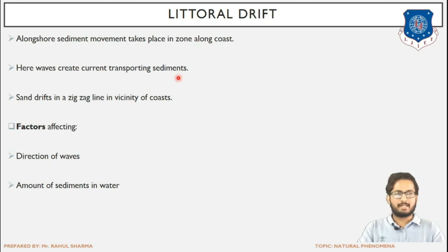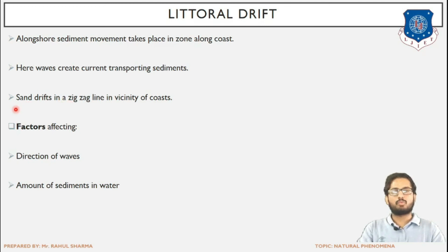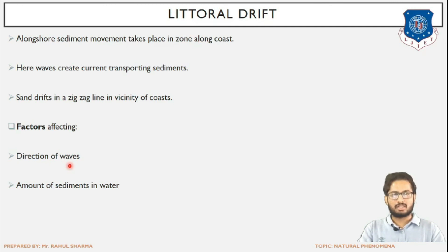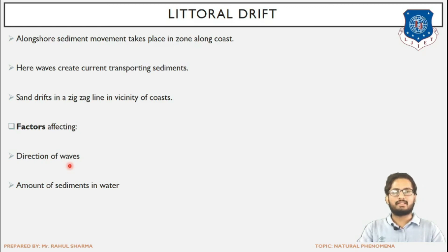Waves create currents transporting sediments. The waves constantly dash against the coast creating horizontal movement of water. The sediment travels in a zigzag line in the vicinity of the coast, as seen in the image — the zigzag line indicates movement of sediments along the length of the shore. Factors affecting direction include: the inclined direction of waves generating currents, the wave wash and backwash continuously continuing and changing the position of sediments, and the amount of sediments in the water.